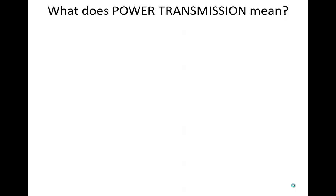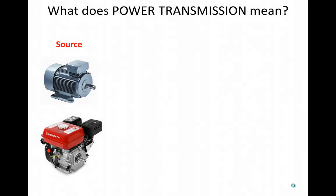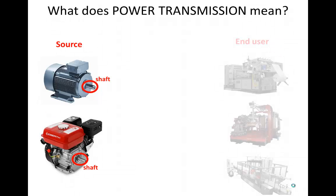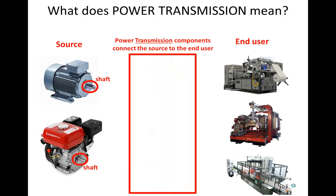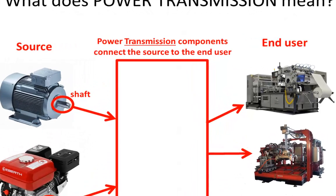What does power transmission mean? Most machines require a source of power — either an electric motor, a gasoline engine, or something similar — which usually produce power in the form of a rotating shaft. The end users of this power are the moving parts of machines that perform useful tasks. Power transmission components connect the source of power with the moving parts of the machine.